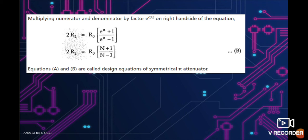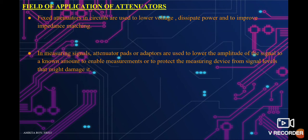Lastly, the field of application of attenuators. Fixed attenuators in circuits are used to lower voltage, dissipate power, and improve impedance matching. In the case of measuring signals, attenuator pads or adapters are used to lower the amplitude of a signal to a known amount, to enable measurement or to protect the measuring device from signal levels that might damage it.